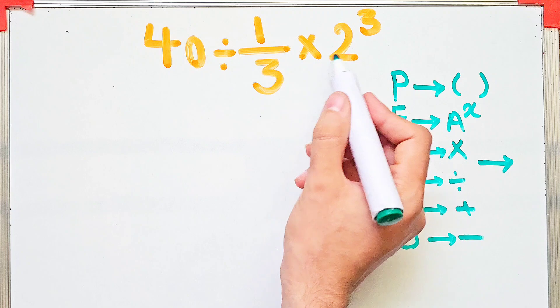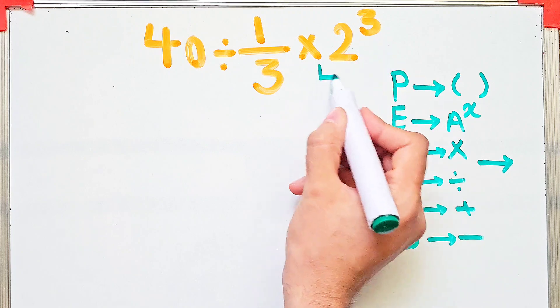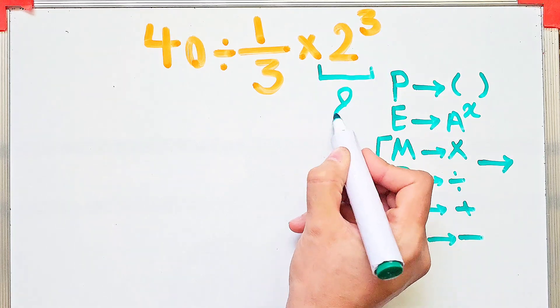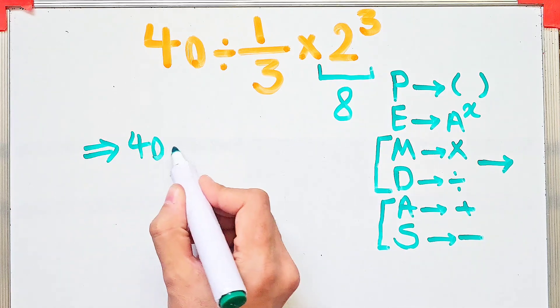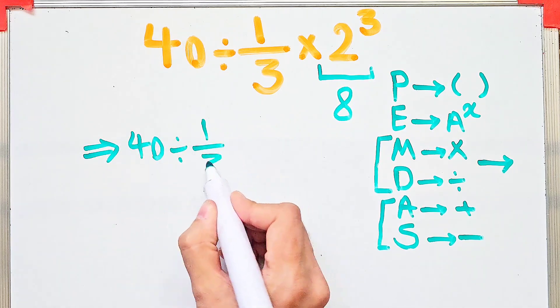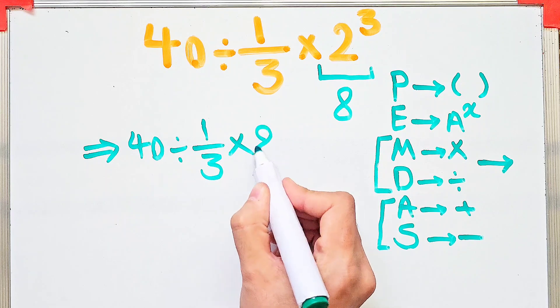First we simplify the exponent. 2 to the power of 3 equals 8. Now we have 40 divided by 1/3 then times 8. In this step, because we have division and multiplication, we start from the left and simplify.